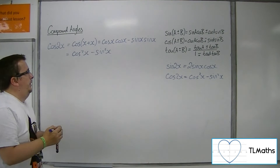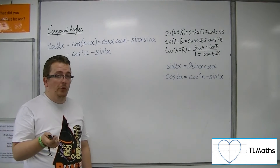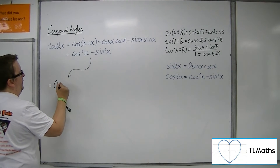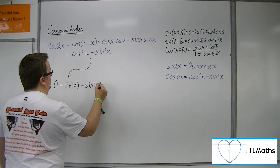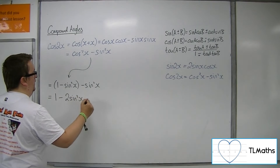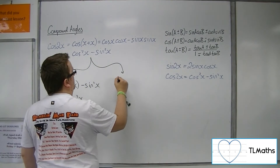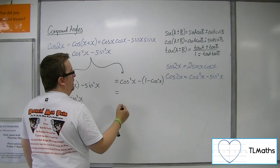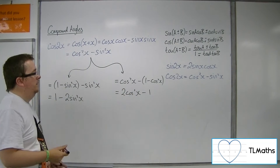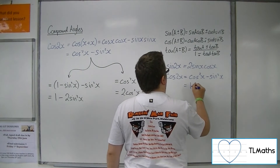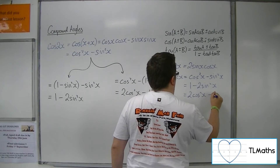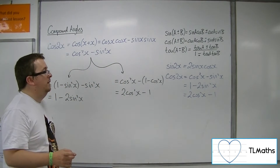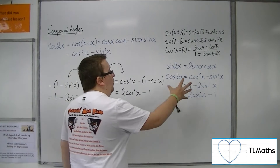In its current form it's not particularly useful. It's more useful if we replace cos squared with 1 minus sine squared, giving 1 minus 2 sine squared x. Or we replace sine squared with 1 minus cos squared, giving 2 cos squared x minus 1. These two forms are actually more useful, but it is worth knowing cos squared minus sine squared as well — all of these are useful.